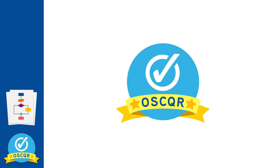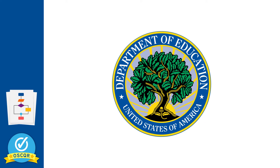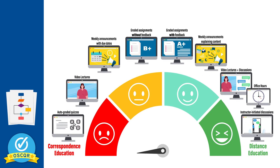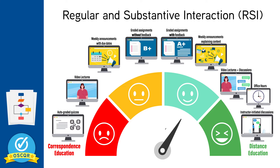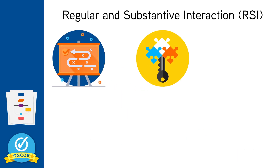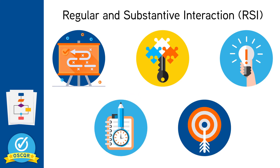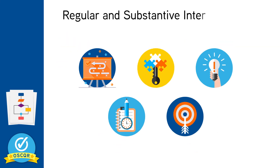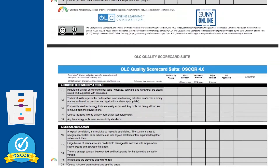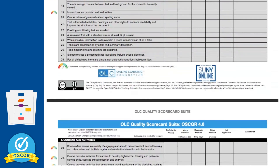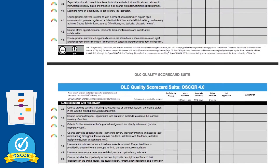OSCQR is the first online course quality rubric that specifically addresses the U.S. Department of Education regulation requirements for regular and substantive interaction, RSI, in the design of online courses. OSCQR can be leveraged by faculty, instructional designers, departments, and institutions to assist in planning, designing, improving, documenting, and implementing online courses and programs that are in compliance with RSI regulations. OSCQR standards guide online course design and refresh efforts, as well as faculty development activities, to support RSI compliance in new online course development and review of existing online courses.